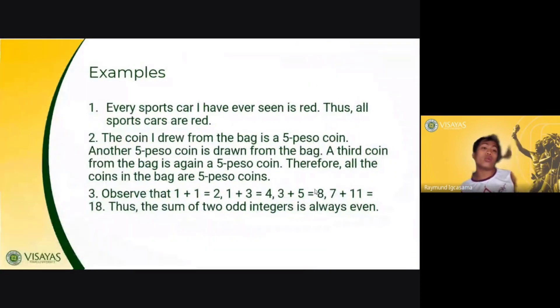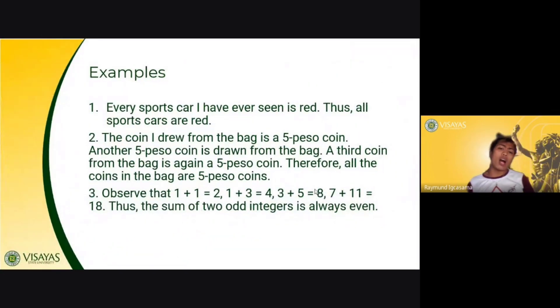Examples of inductive reasoning. Every sports car I have ever seen is red. Thus, all sports cars are red. So this first premise or statement you have here, every sports car I have ever seen is specific. From specific, you construct a general rule, a conclusion saying that all sports cars are red. But this conjecture may be true, but at the same time, it can also be false.